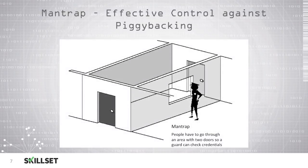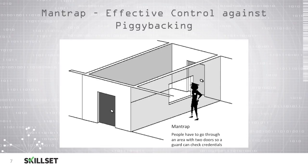A man trap can be used to prevent piggybacking. With a man trap, employees enter through the first door and then are in a small hallway. They then need to swipe their card again to enter through the second door. These are typically designed so that the second door will not open until the first door closes, and then the employee can be sure that no one followed them into the man trap. These can also be designed with a security guard sitting inside a control room who is able to look through the window into the hallway and verify that no additional persons are entering. Remember for the CISSP exam that a man trap is a control that can be used to prevent piggybacking or tailgating.